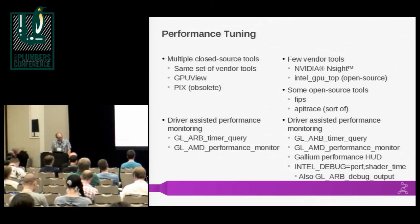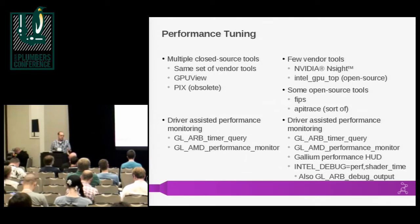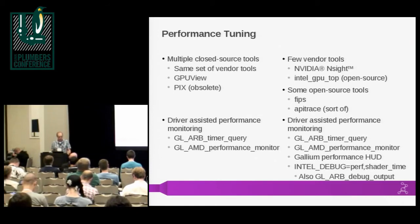API trace lets you do some performance work but because it's replaying traces, it's not especially useful for performance work. There's a new project just getting started called FIPS that puts a heads-up display on top of a running OpenGL application and provides some performance information live.